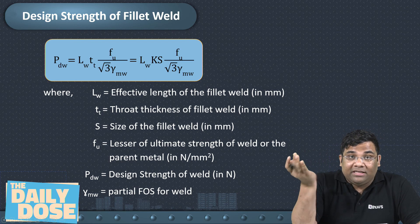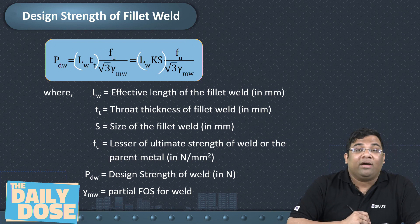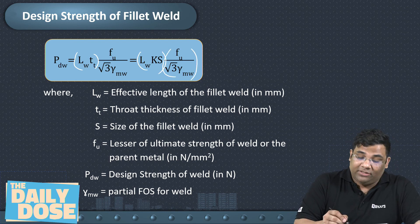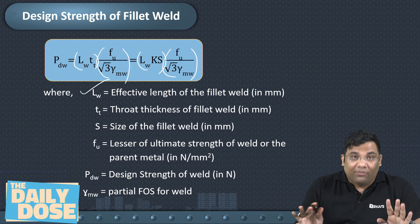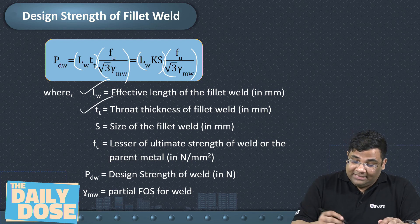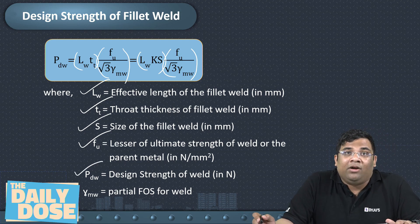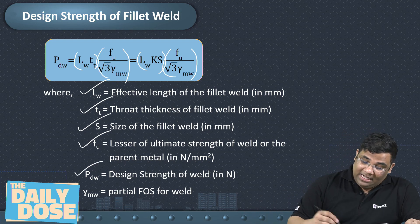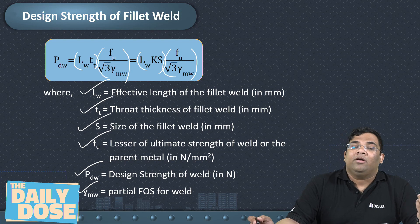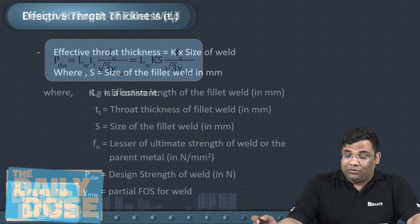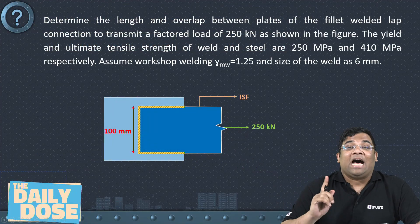To summarize, the load carrying capacity of the weld equals lw × throat thickness × (fu / (√3 × γmw)), where lw is effective length, tt is throat thickness, s is size, fu is ultimate stress, and γmw is 1.25 for shop welding and 1.5 for field welding. I will now solve one question and give you one as homework.